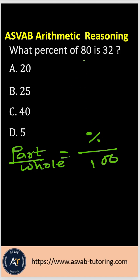So here, as usual, the part is represented by 'is' and the whole is represented by 'of'. You can plug in the values — 'of' means whole and 'is' means part.